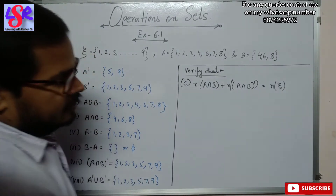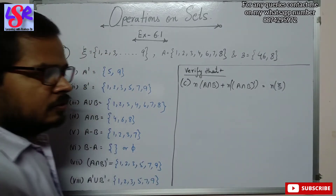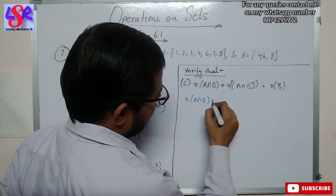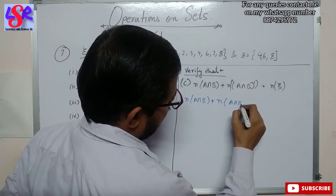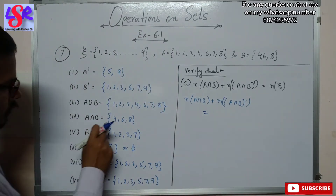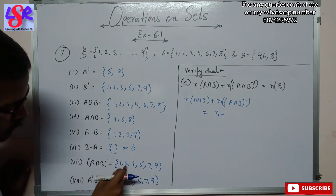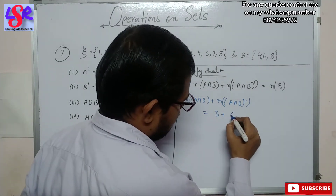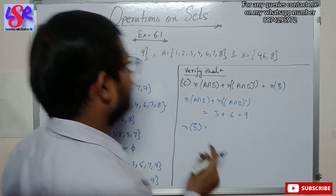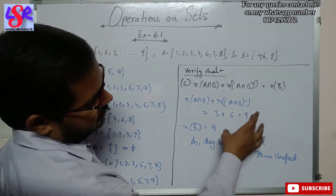Now moving to part C, we verify N(A intersection B) plus N(A intersection B complement) equals N(universal set). N(A intersection B) = 3, and N(A intersection B complement) = 6, giving 3 + 6 = 9. N(universal set) = 9. Both equal 9, hence verified.